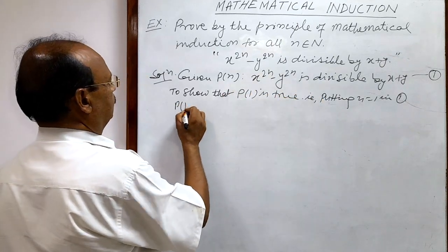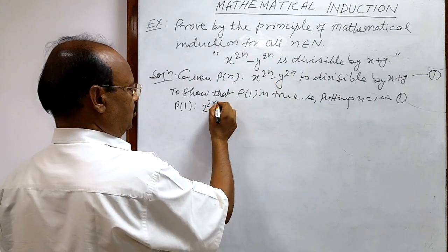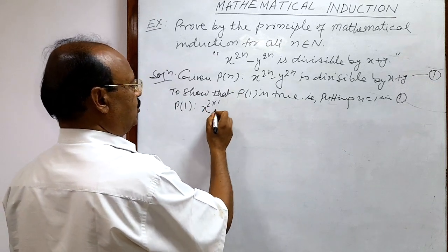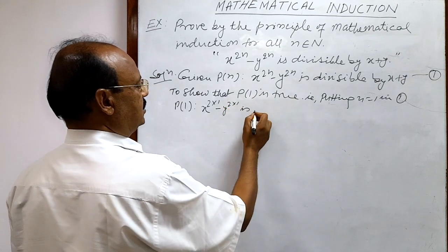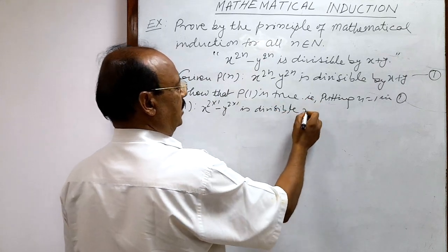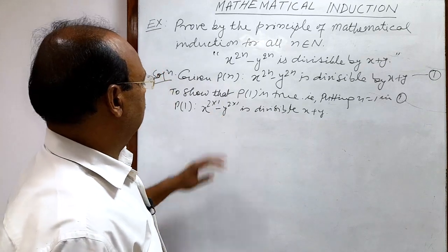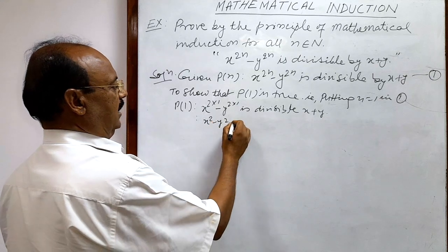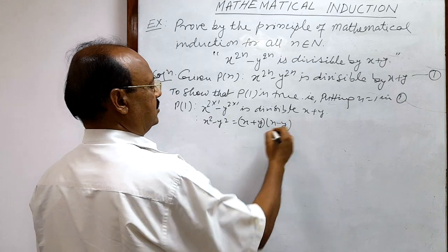P(1) is obtained by putting n equal to 1. So this becomes x to the power 2 times 1 minus y to the power 2 times 1, which is divisible by x plus y. This simplifies to x squared minus y squared.